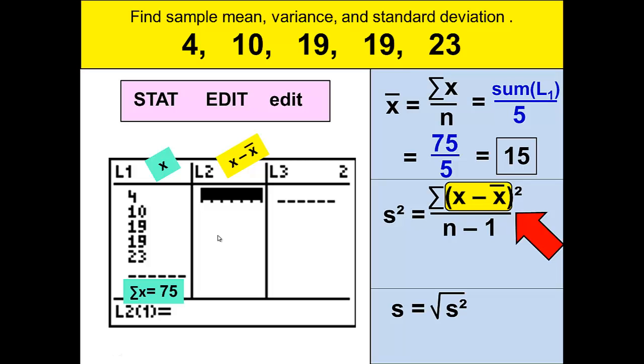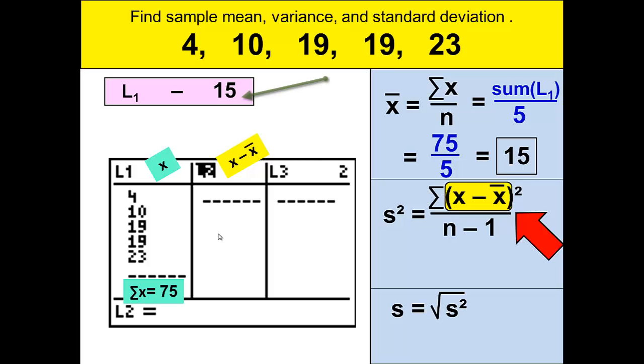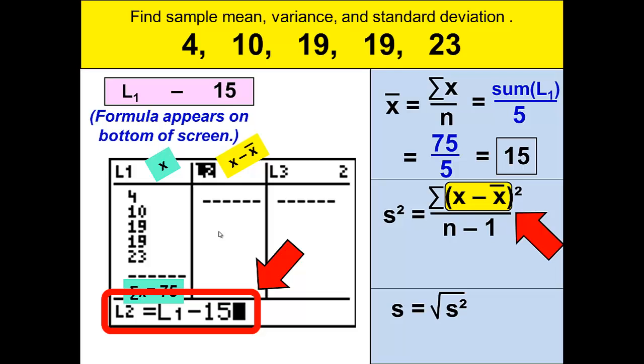So we will find x minus x̄. To do so, we can give the calculator a command that will complete this task in one step. Move the cursor so that the L2 is highlighted as shown on the screen. This will allow you to put in a formula. And we will type in list 1 by typing second L1 minus 15. Notice that the formula will appear at the bottom of the screen, and this takes the x's from the list 1 and subtracts the mean of 15 from each value.